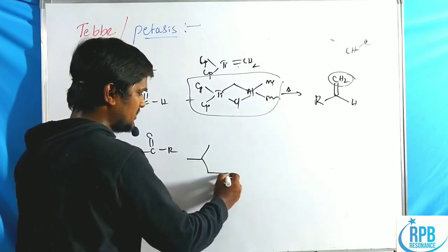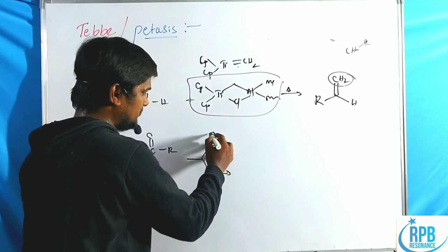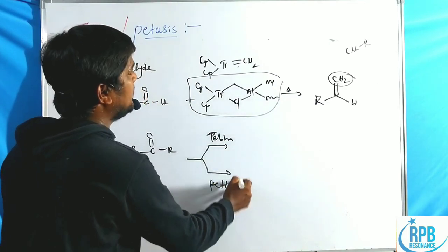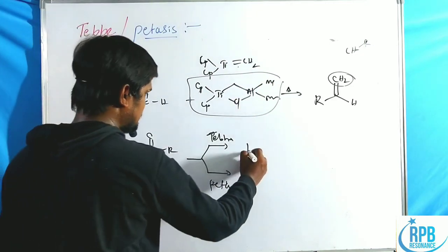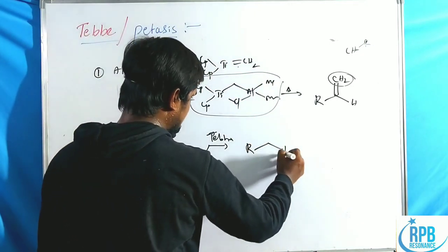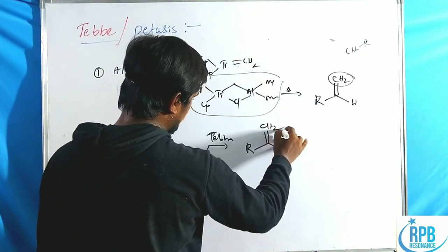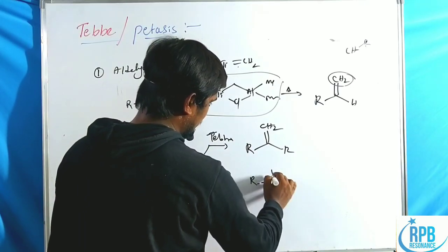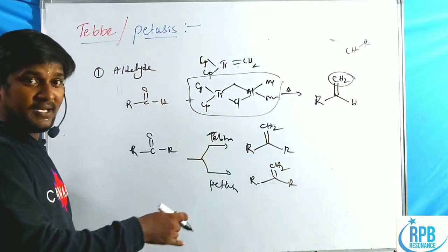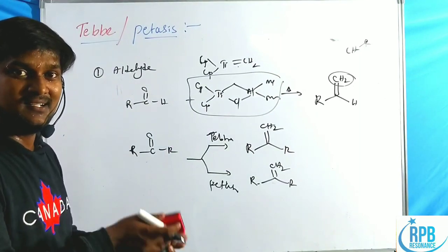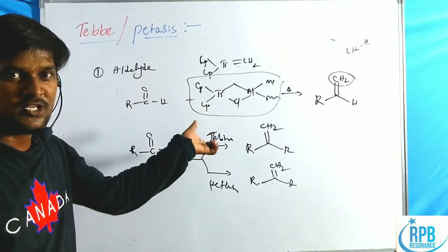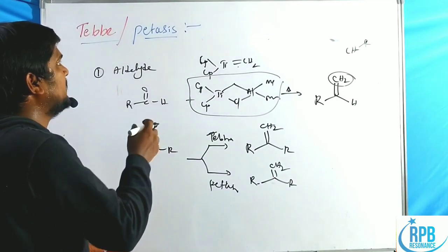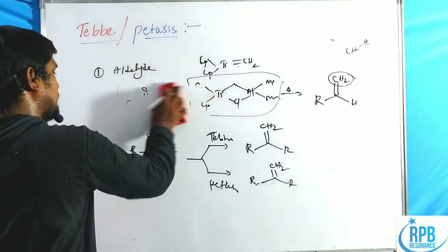Both Tebbe and Petasis reagents generate the same titanium alkylidene complex and produce the same C=CH₂ methylenation products from carbonyl substrates. Wittig reactions can also form such products but the main advantage of Petasis/Tebbe is their reactivity with esters and amides.